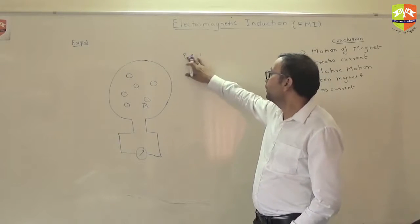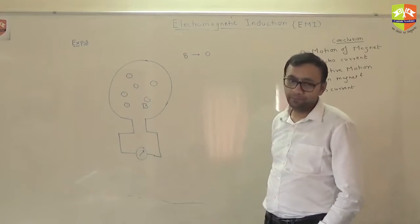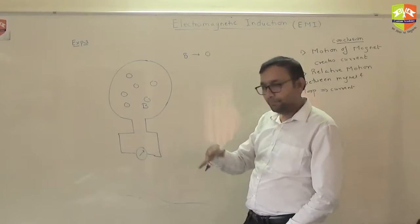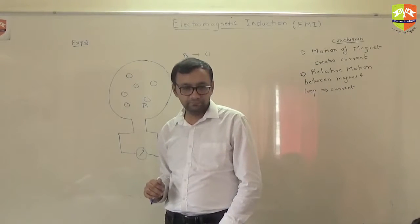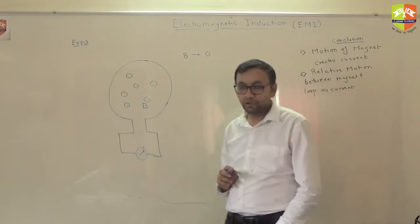Or you can say that whatever was a B earlier, you switch it off and it becomes 0. B was a magnetic field, it became 0 the next moment. But the galvanometer showed the deflection. What does it mean?